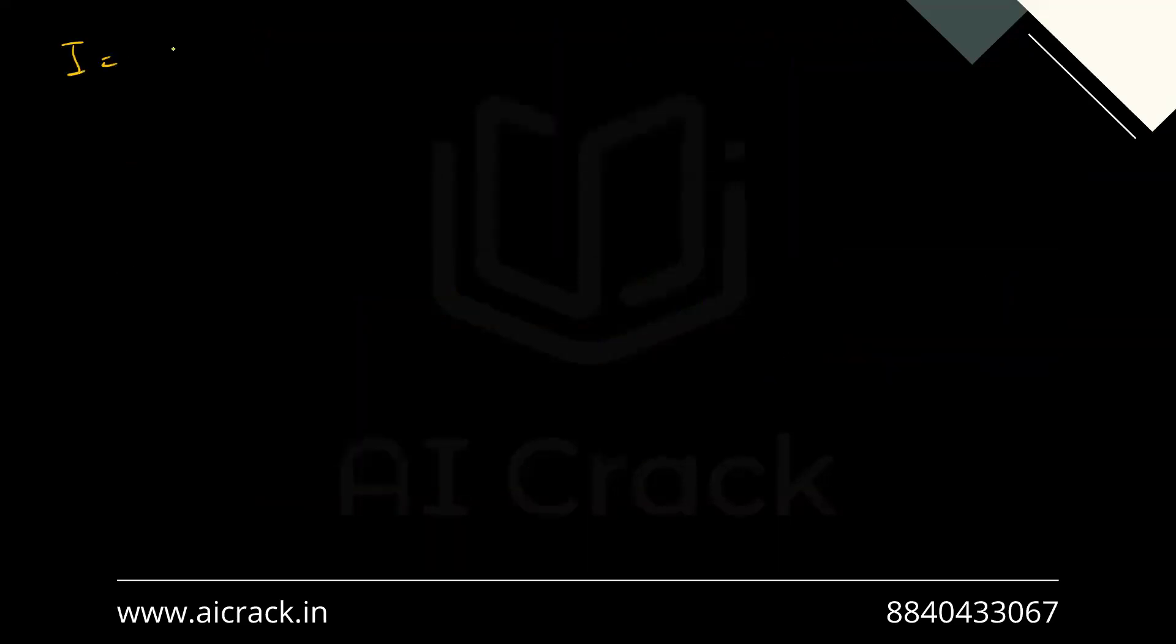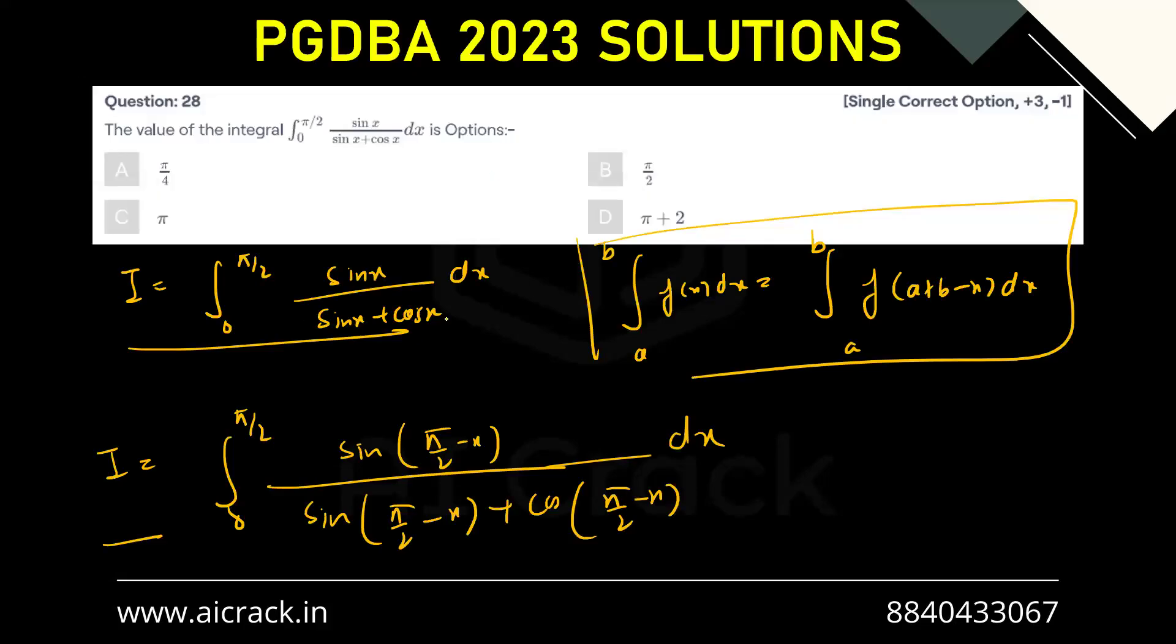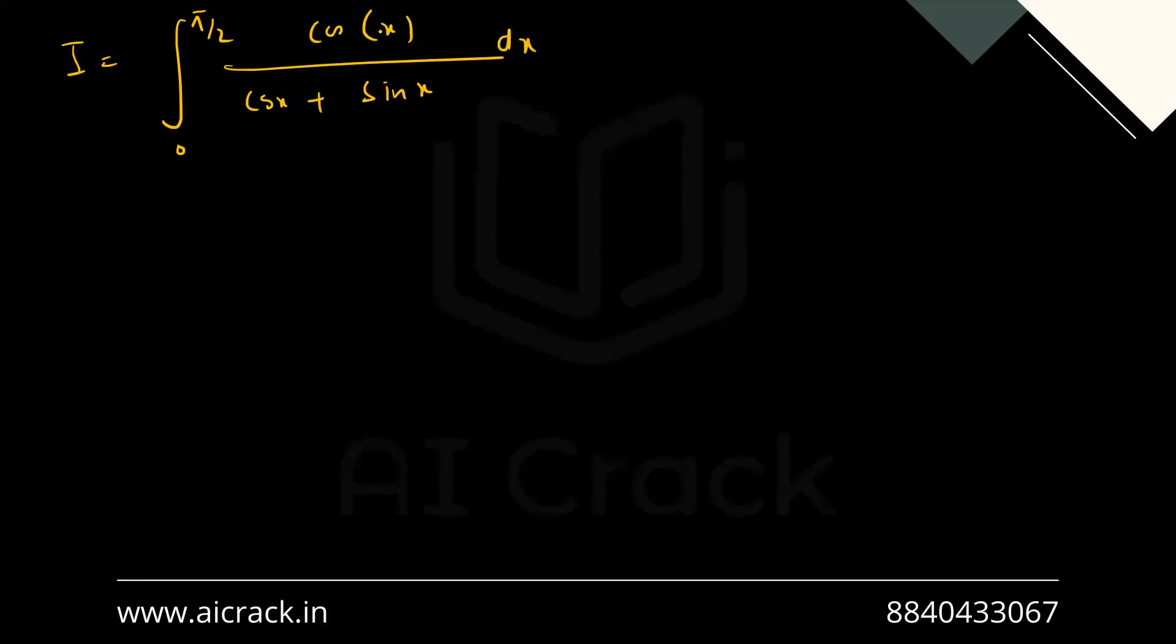So I can be simplified as 0 to pi by 2. This becomes cos x divided by, this becomes cos x and this becomes sin x dx. I can see that denominator is same but we have a change in numerator. So what we can do, we can add both of them.